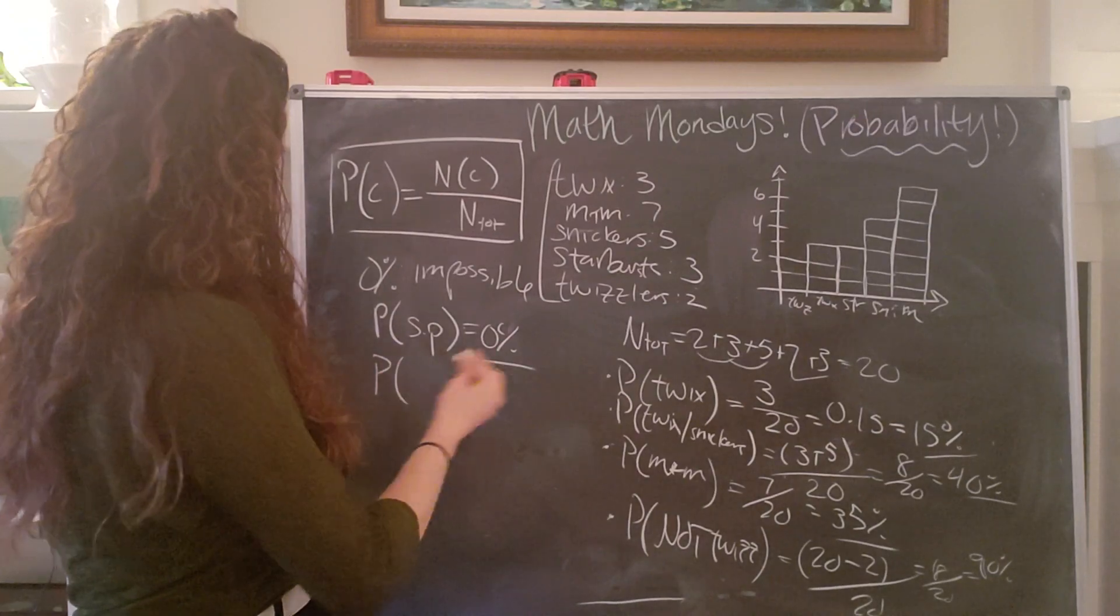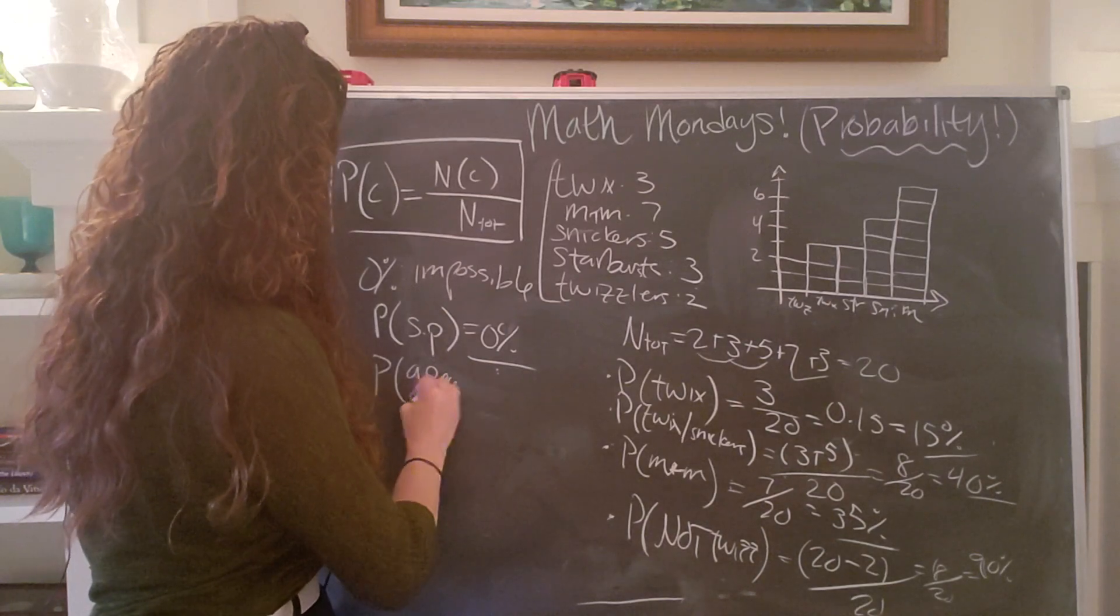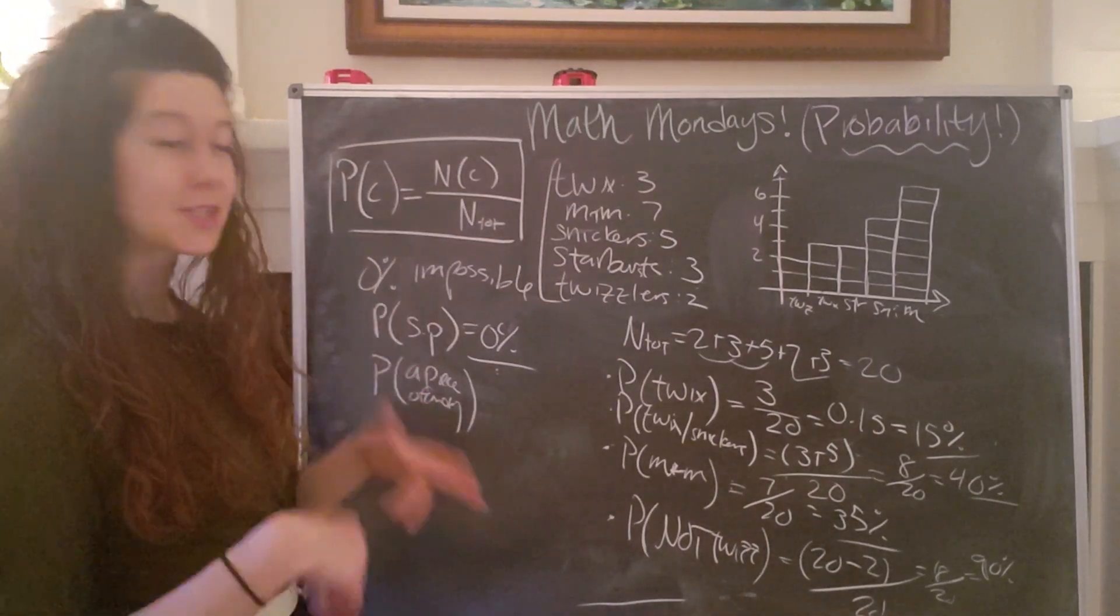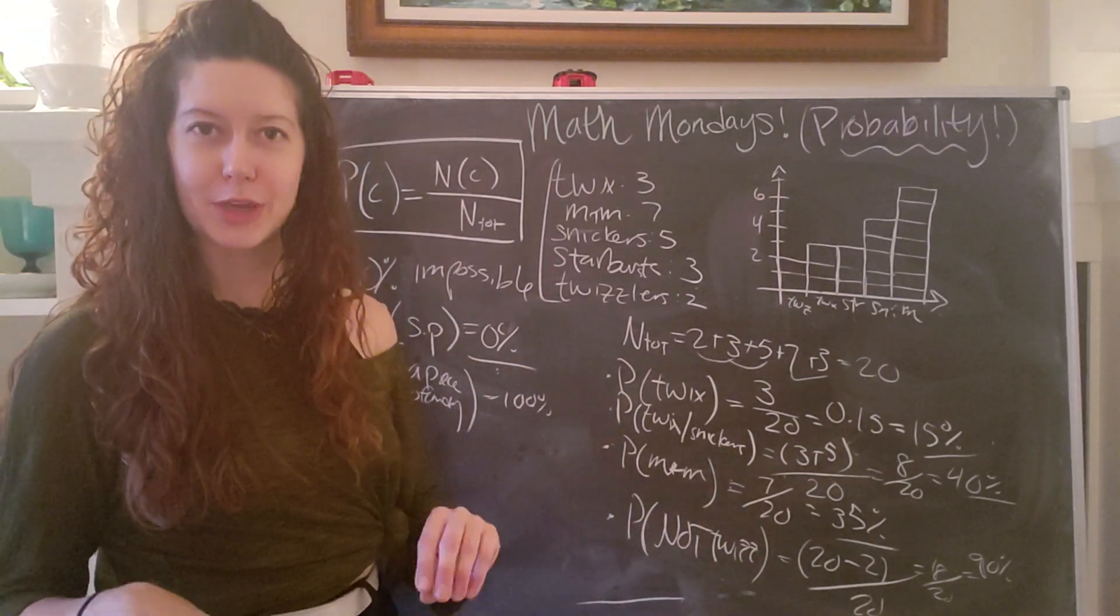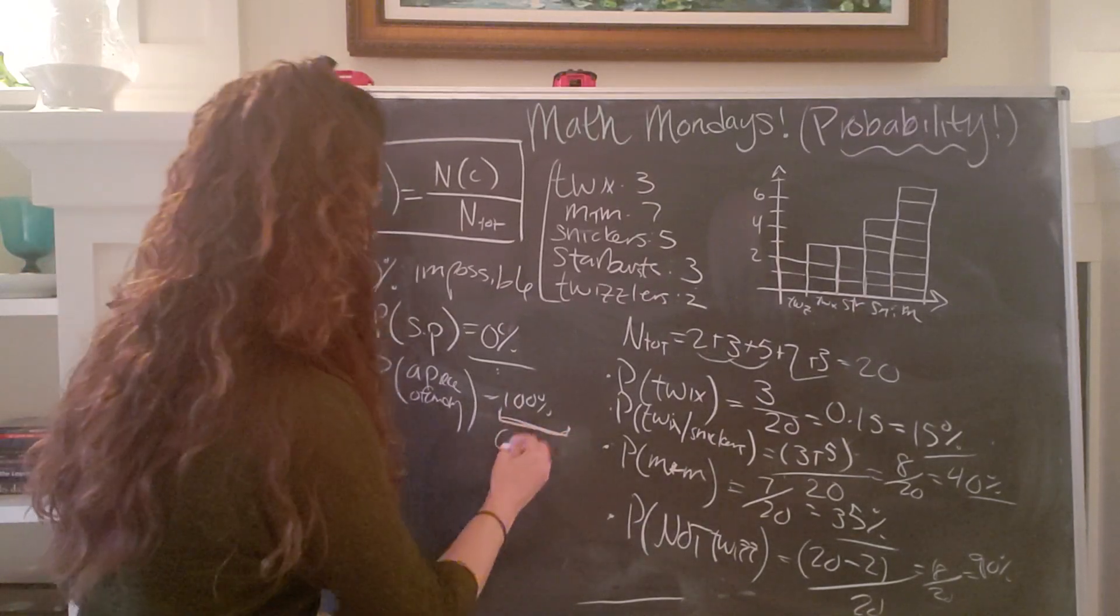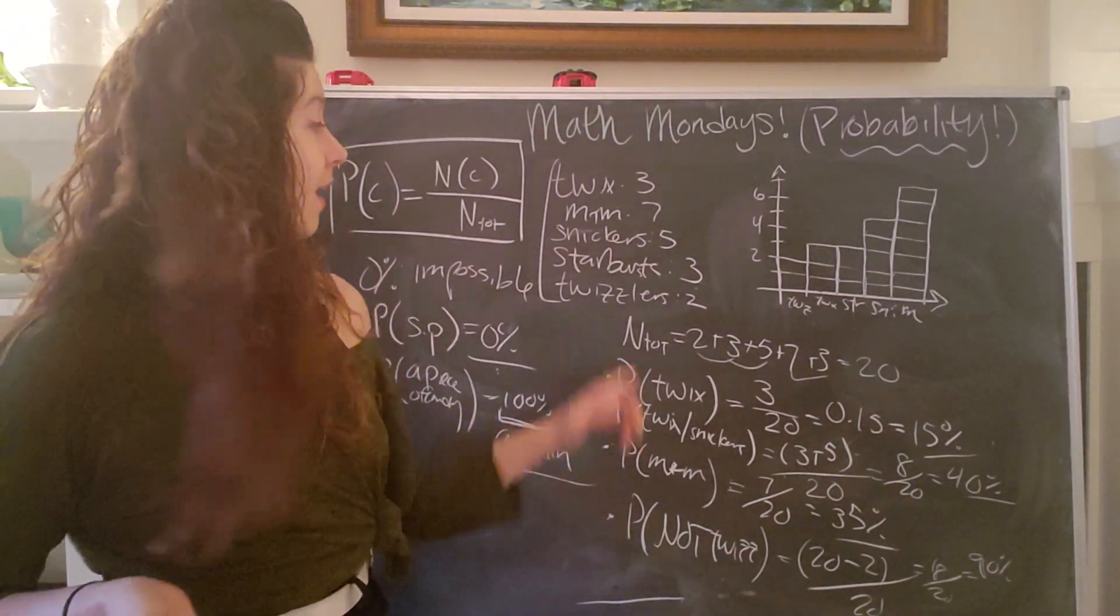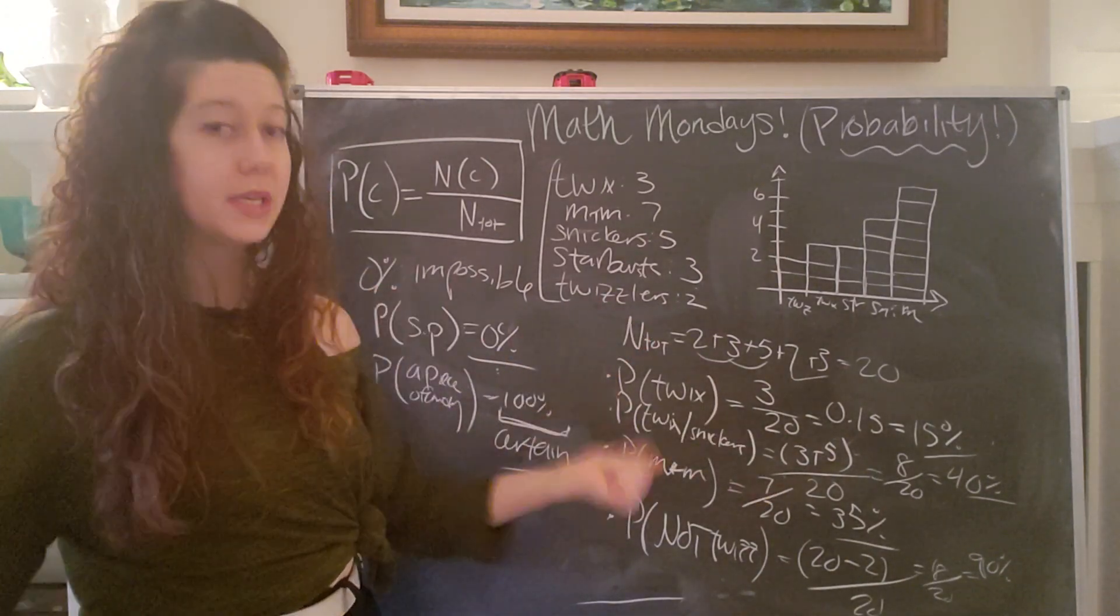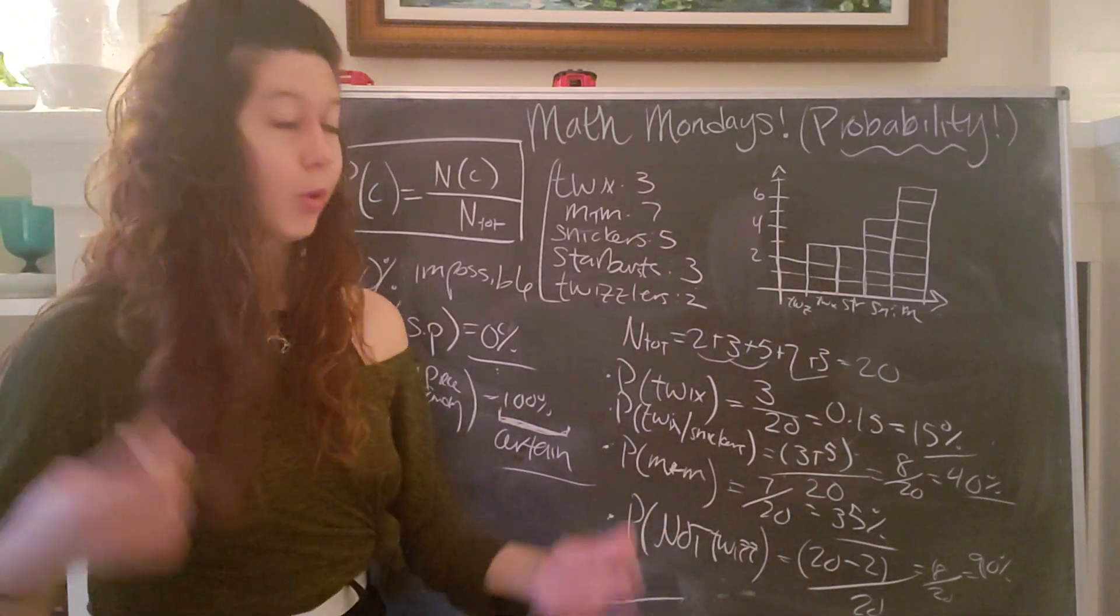But the probability that I will get some candy, like I'll say probability of a piece of candy. That's a very hard to read, but probability of some piece of candy is 100%. So assuming that I can actually grab things with that oven mitt, it is 100% likely or it is certain that I will get some piece of candy. I might not be stoked about the piece of candy that I pull out, but I will pull out some piece of candy because it is 100% certain that there are some things in that bag and I will pull out one of them.